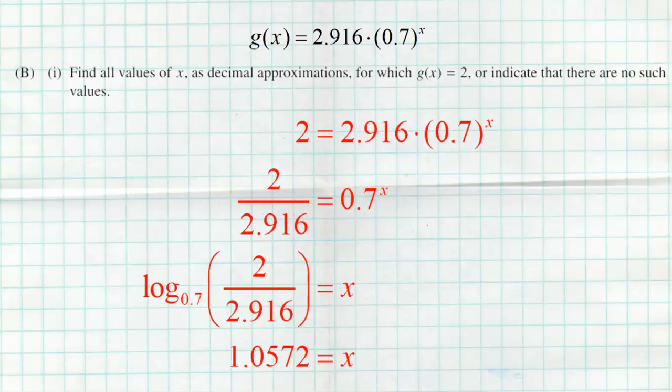The first step is to divide both sides by the 2.916. Then to get rid of the x in the exponent or to bring that x down, we're going to turn this from an exponential statement into a logarithmic statement. So we get log base 0.7 of 2 divided by 2.916. If you type all that into your calculator just like that, you should get an output value of 1.0572 equals x. If you have a TI-84 calculator, you can choose the log of any base where we can create a log of base 0.7. If you don't, you'll have to use the change of base property where we use log of 2 divided by 2.916 divided by log of 0.7. Either way, we get a value of 1.0572.